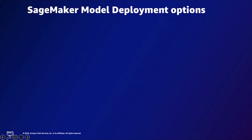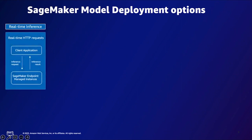Let's unpack the different modes available in SageMaker for deployment. The first is real-time inference. Your client application sends data to your model via HTTP request. The endpoint will route the request to the appropriate instance, run it through your model, and return a result. This is ideal for real-time applications that require ultra-low latencies and high throughput — examples include ad serving, personalization recommendations, etc.